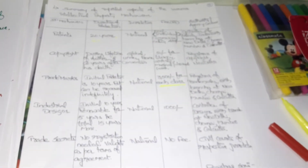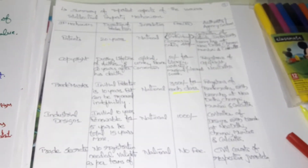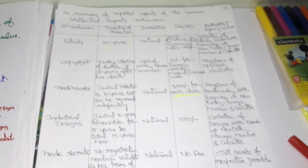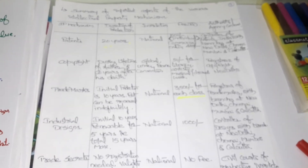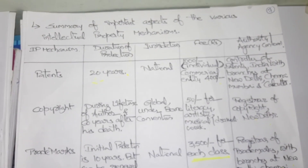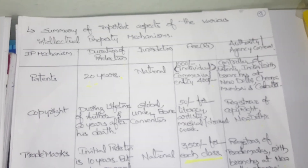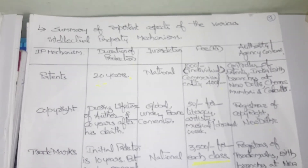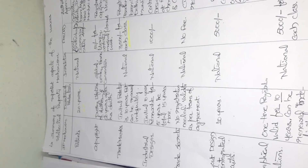This table is very important. You need to remember the mechanisms, duration of protection, jurisdiction, fee, and authority for each type of intellectual property. This table is extremely important.